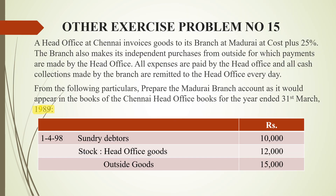In the problem, a head office at Chennai invoices goods to its branch at Madurai at cost plus 25%. All expenses are paid at the head office, and the branch makes independent purchases. Note that there is a typing error in the problem — it states 1989, but we are working with 1998 details.